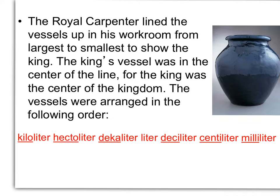The royal carpenter lined the vessels up in his workroom, from the largest to smallest, to show the king. The king's vessel was in the center of the line, for the king was the center of the kingdom. The vessels were arranged in the following order: kiloliter, hectoliter, dekaliter, liter, deciliter, centiliter, milliliter.